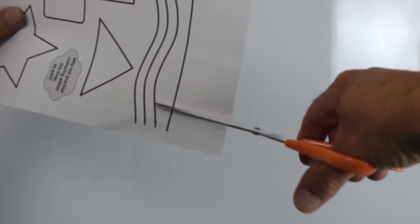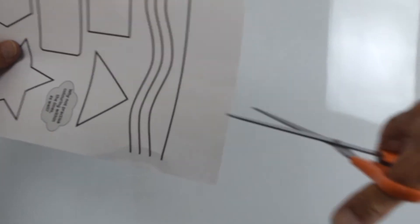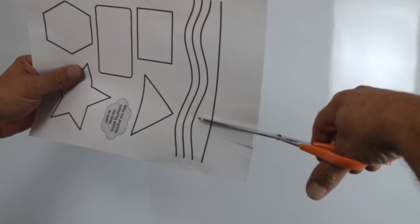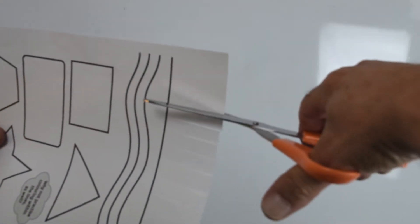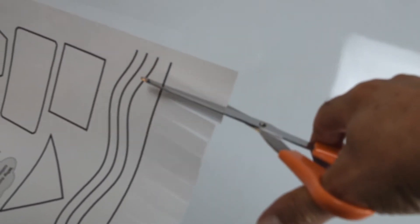Keep closing the scissors but not actually snipping at it. Closing and stopping at the line, closing and stopping at the line. When you've done this, you can make confetti.